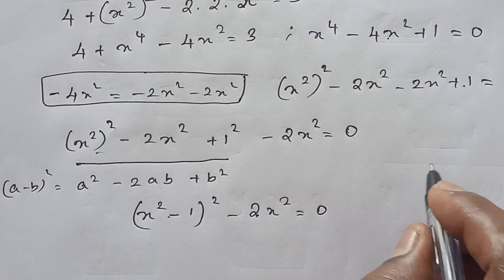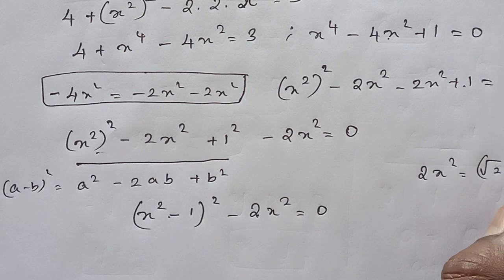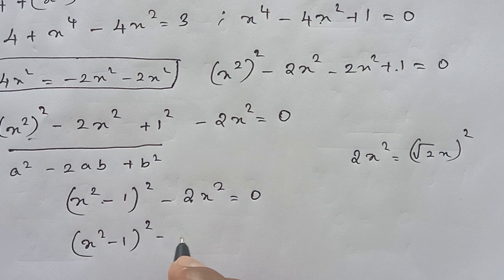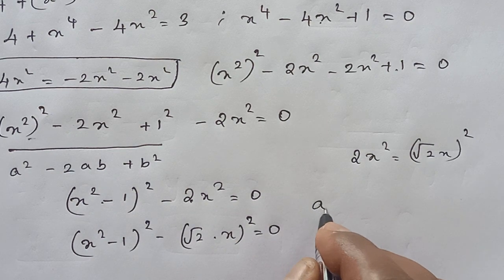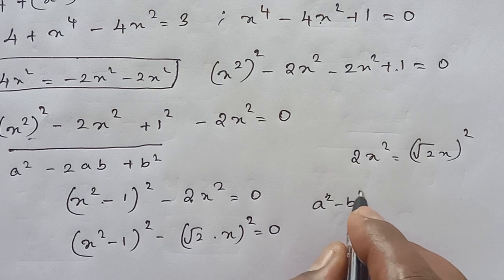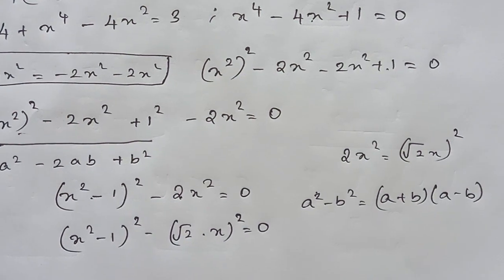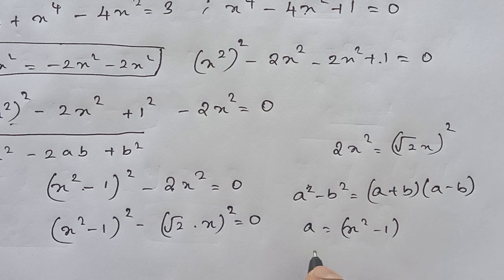Now this 2x squared we can write as (√2 times x) squared, which equals 0. This is of the form a squared minus b squared, equal to (a plus b)(a minus b). Here a is x squared minus 1 and b is √2 times x.